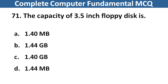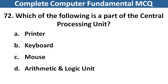The capacity of 3.5 inch floppy disk is? Right answer is option D, 1.44 MB. Next question: Which of the following is a part of central processing unit? Right answer is option D, Arithmetic and Logic Unit.